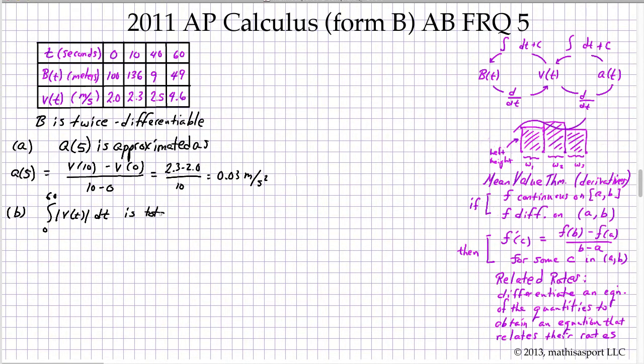Finally, part D is a related rates problem. They're giving us a formula that connects the distance to a light with the position. And from that, we're asked to find a relationship between the velocity that we have to the rate of change of the distance. Remember, a related rates problem is one where we find an equation of the quantities, use that equation to differentiate to gain a new equation that will then relate the rates in question. Because we're asked to find the rate of change of L and we're given the rate of change of B, we need a formula that connects them. Fortunately, that's supplied.